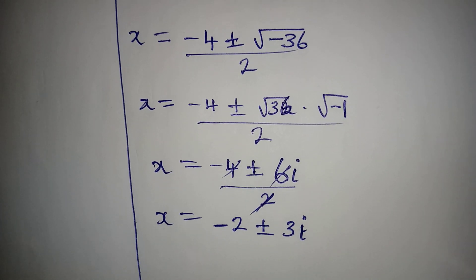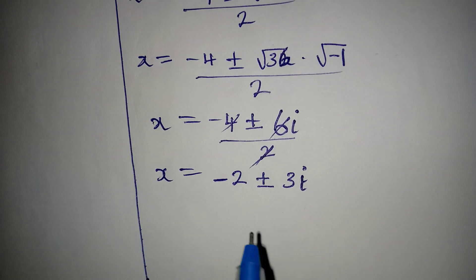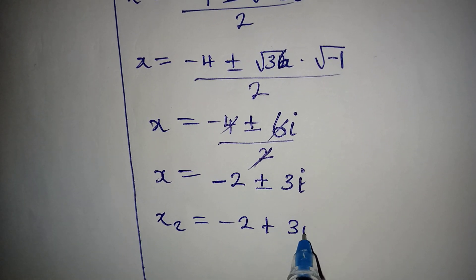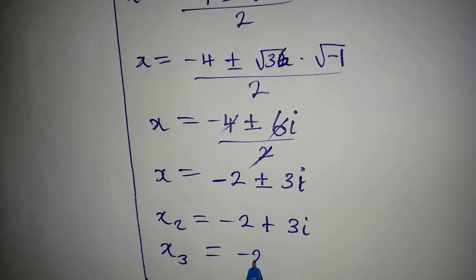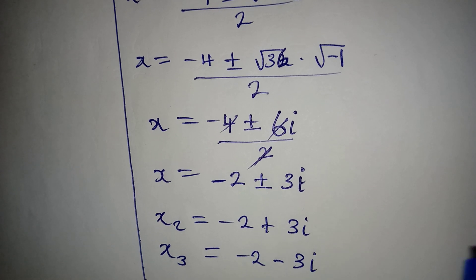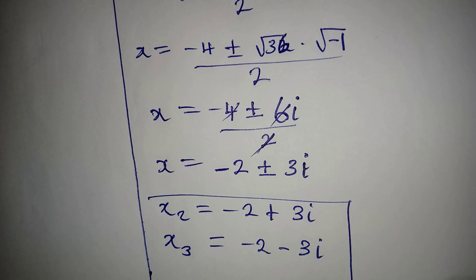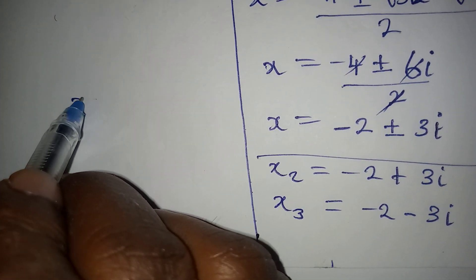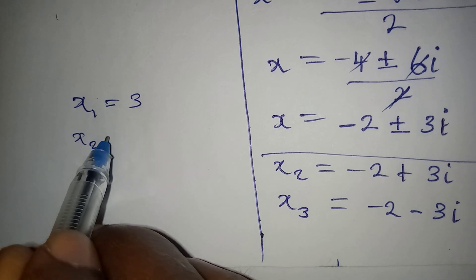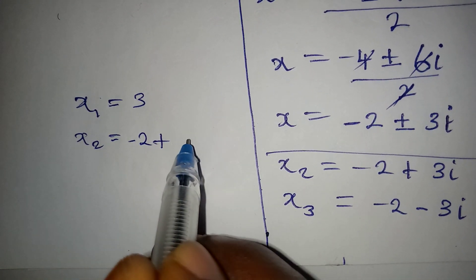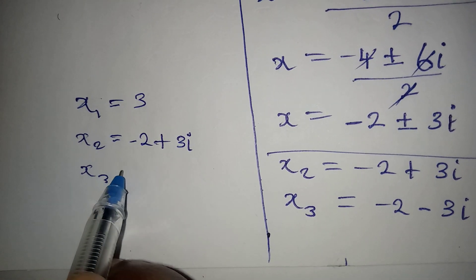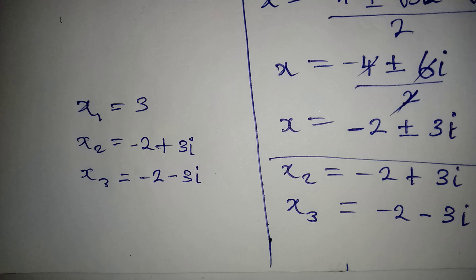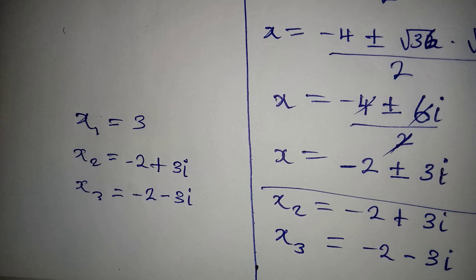This is a two-in-one solution: x₂ = -2 + 3i and x₃ = -2 - 3i. Bringing all three solutions together: x₁ = 3, x₂ = -2 + 3i, x₃ = -2 - 3i. Remember, only the first solution is real. Thank you for watching.